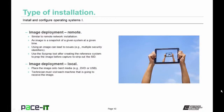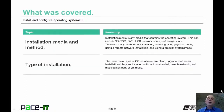Image deployment local is where you place the image onto hard media — a DVD, USB, or portable hard drive — and visit each machine deploying the image one by one. That concludes this session on installation media, methods, and different types of installation.